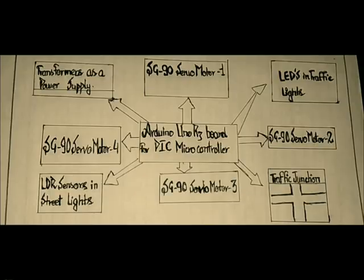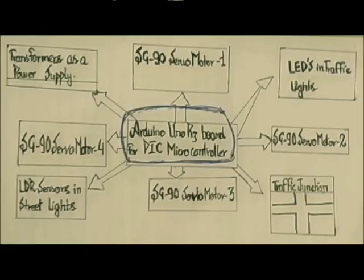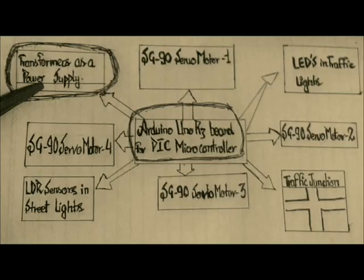Here in this circuit we are using Arduino Uno R3 as a board for the PIC microcontroller. We are also using a transformer as a power circuit or power supply, which is used to give power to the PIC microcontroller and subsystems.